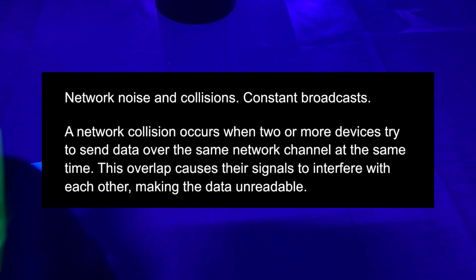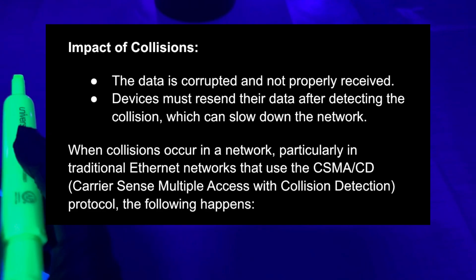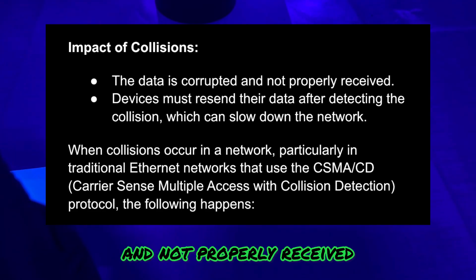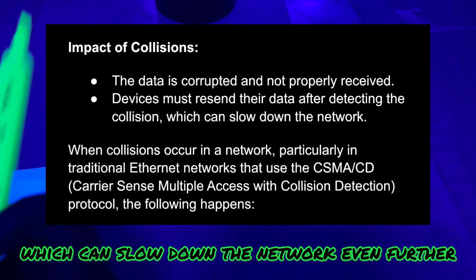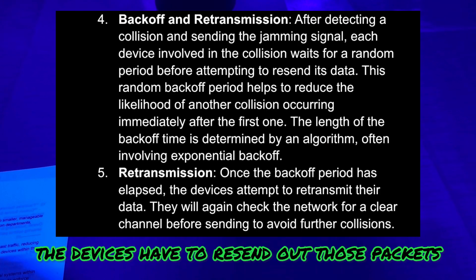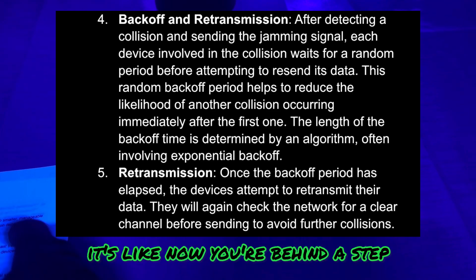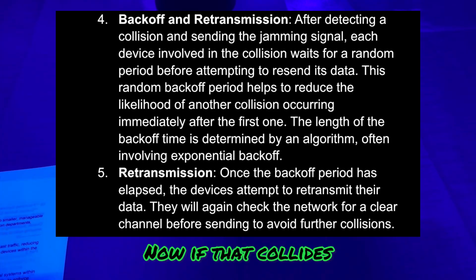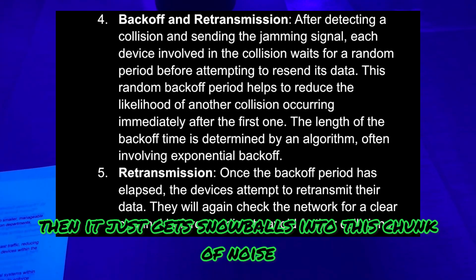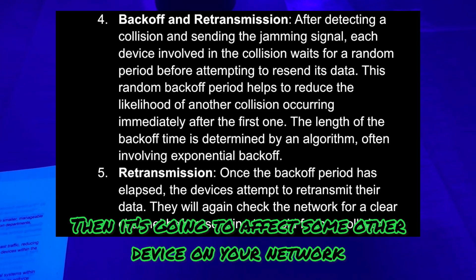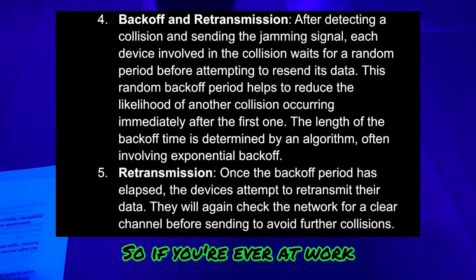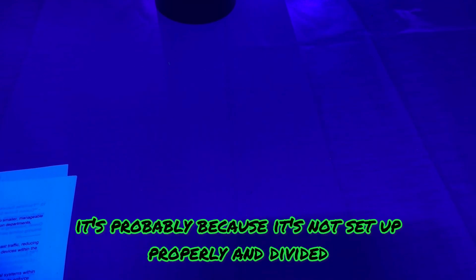The impact of a collision: the data is corrupted and not properly received. Devices must resend their data after detecting the collision, which slows the network further. It snowballs - the device is behind a step and tries to broadcast again; if that collides too, it just gets louder and noisier. If you're at work and your network is really slow, it's probably because it's not set up properly or divided. Subnets can fix that issue.